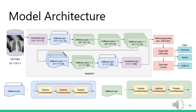We have used the MobileNetV2 architecture, which is a lightweight architecture, for this research. We replaced the fully connected layer of the model and used our own set of top layers instead. These include a global average pooling layer with 1280 neurons, a dropout layer with 1280 nodes and a 20 percent drop rate, and finally a dense layer of three nodes.